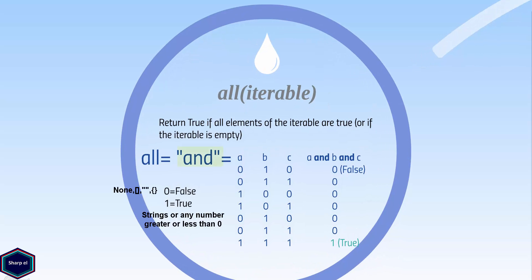If you are familiar with logical operators, then all function is like the logical AND operator. All function returns a boolean value true when all the elements in the iterable are also boolean true. If any element in the iterable is false, then all function returns boolean false.